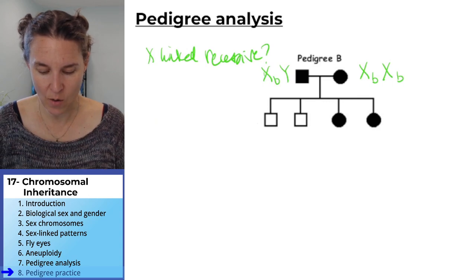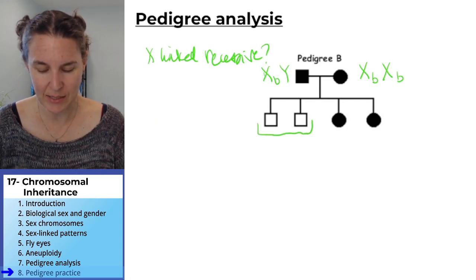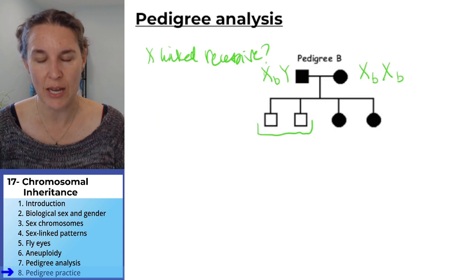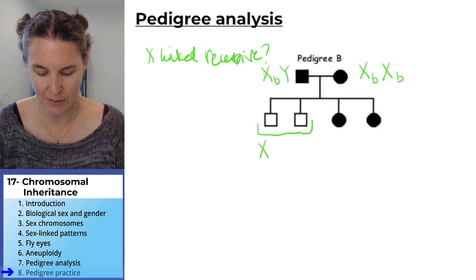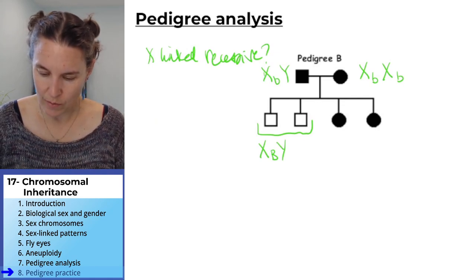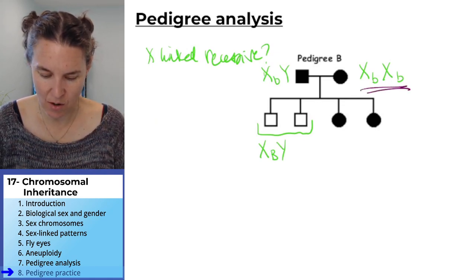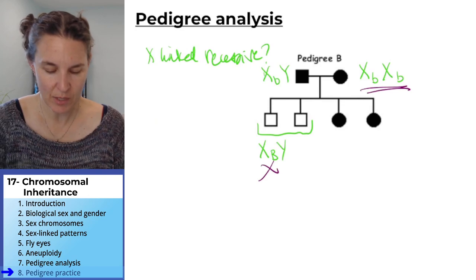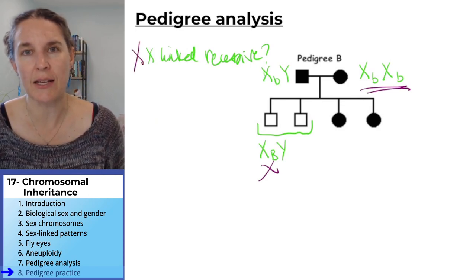And then I go automatically to here: is there any way that those boys could end up with X big B, Y? No, that cannot happen because there are no big B's. So no, it is not X-linked recessive.